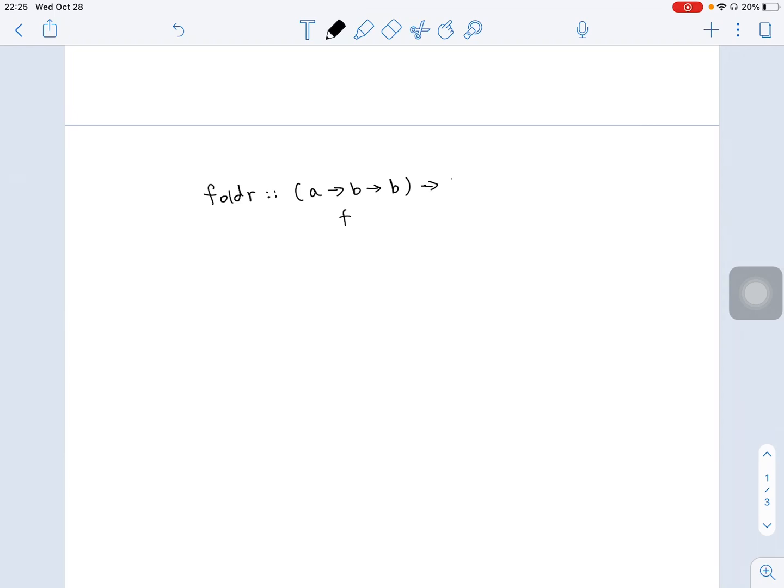The second parameter for FoldR is a type b, and the third one is a list of a. The result at the end is going to have a type of b.